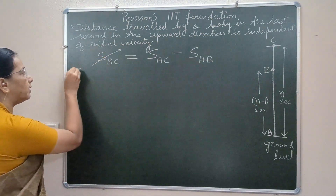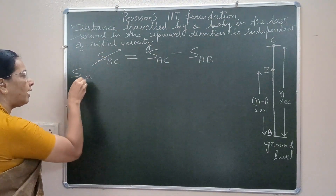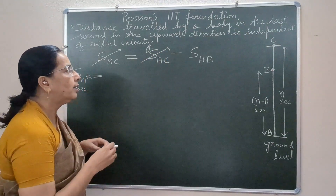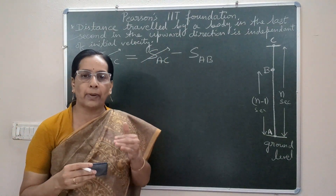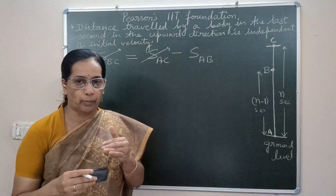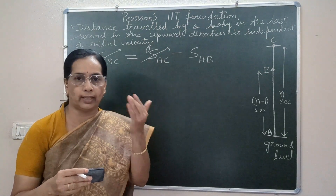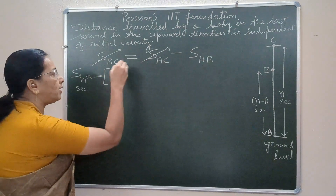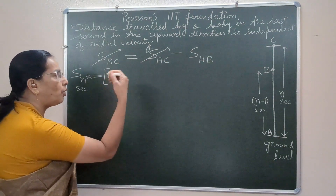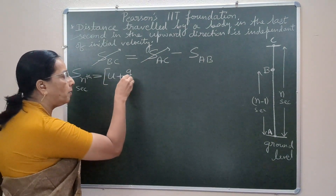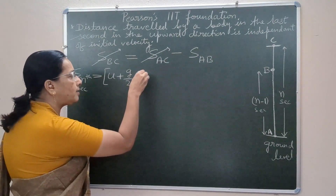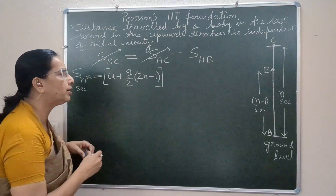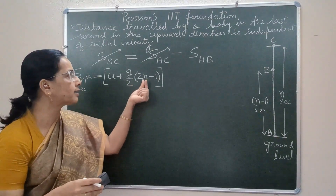The formula for distance traveled by the body in the nth second is u plus a by 2 times (2n minus 1). Here, since it is vertical motion under gravity, we write it as u plus g by 2 times (2n minus 1). This is the formula for distance traveled by the body in the nth second.